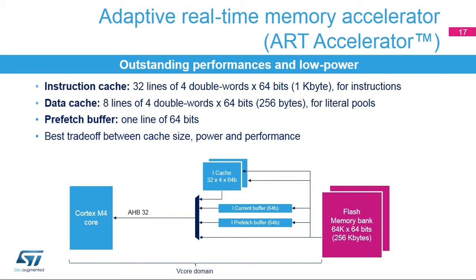In a cache line, the four double words may not all be valid. In case of a miss, the Cortex-M4 takes the instruction directly from flash memory. In parallel, the 64-bit line is copied into the current buffer and into the iCache if enabled. The next sequential access is taken directly from the current buffer. If prefetch is enabled, another 64-bit flash access is performed to fill the prefetch buffer with sequential data. When data is present in the current buffer, the CPU reads from it; the next sequential read is performed from the prefetch buffer, which is then copied into the current buffer.